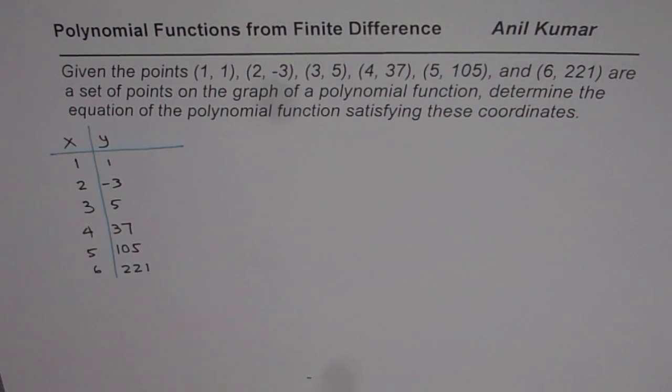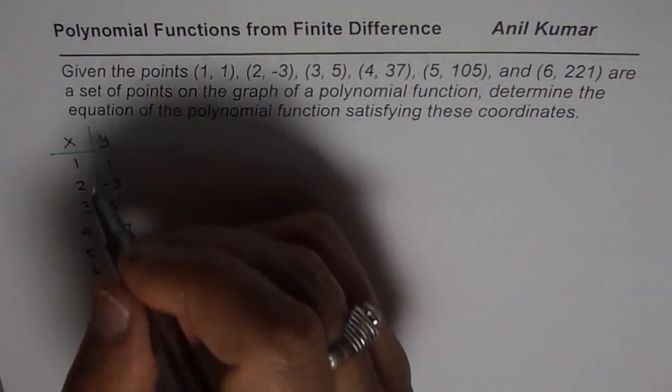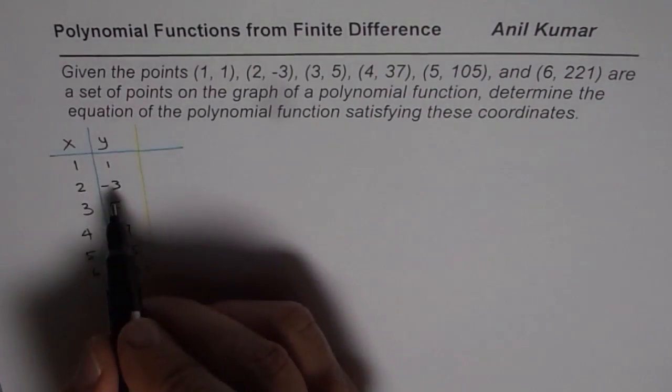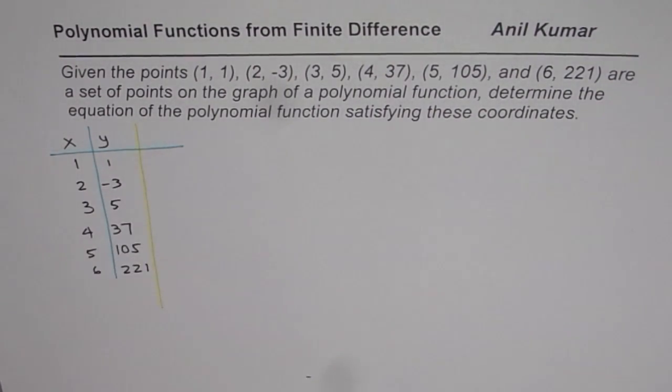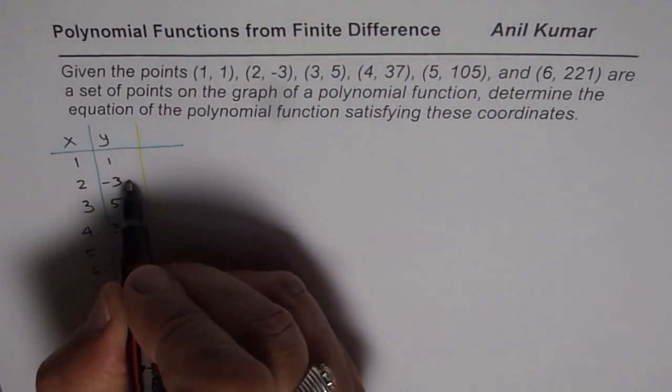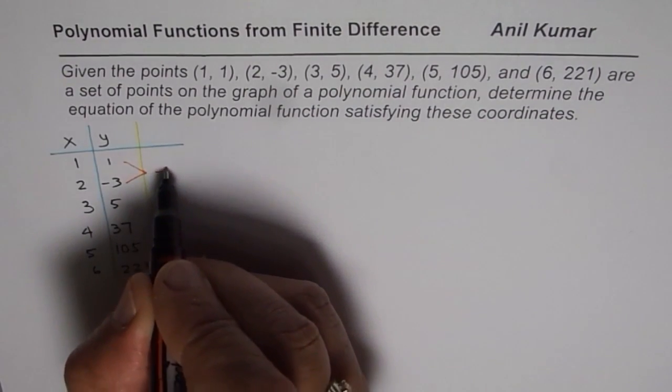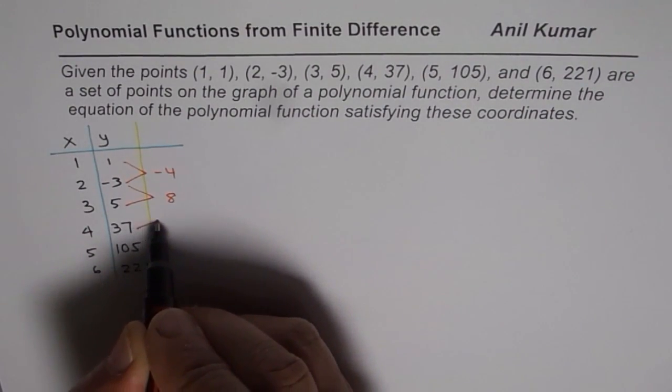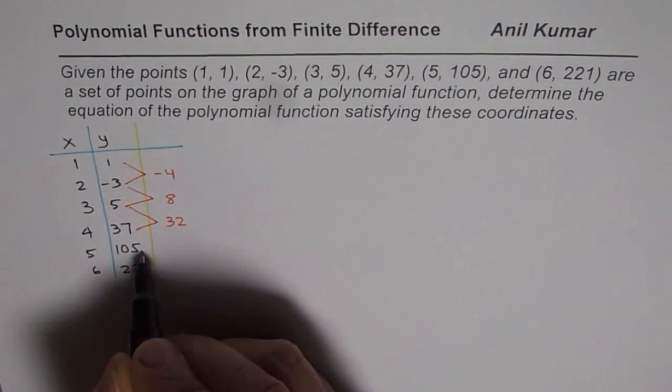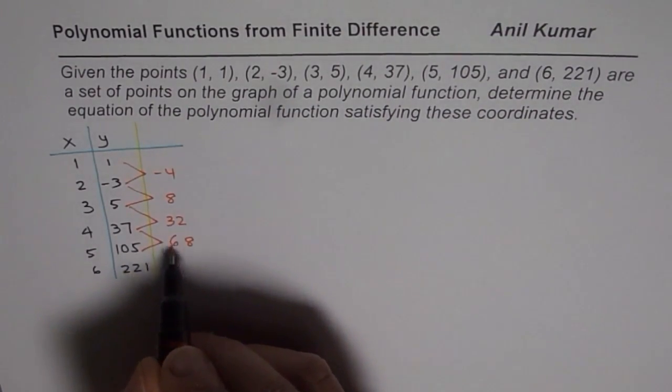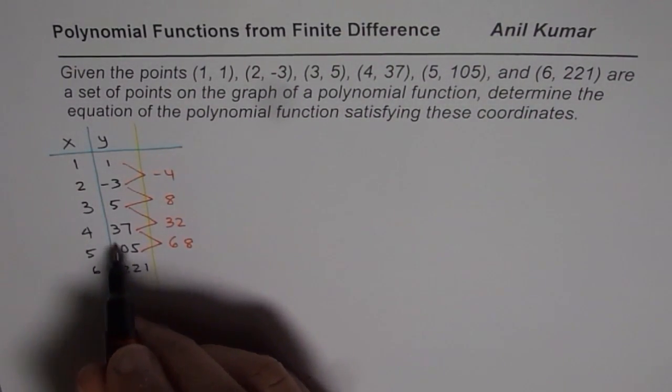So let us find the finite difference and see the degree of the polynomial. First finite difference for this equation is -3 minus 1, which gives us -4. 5 minus -3 becomes 8. 37 minus 5 means 32. 105 minus 37 is 68, and 221 minus 105 is 116.